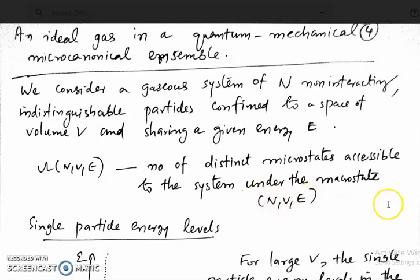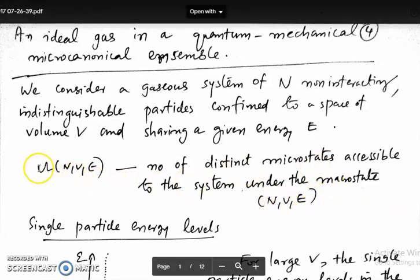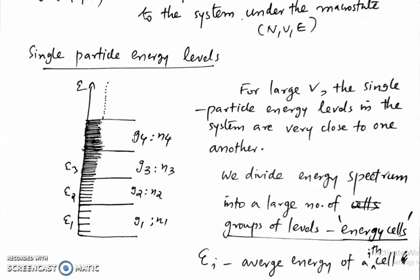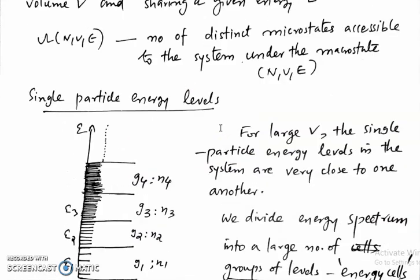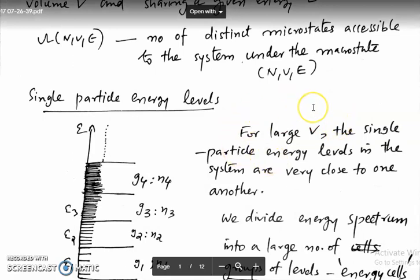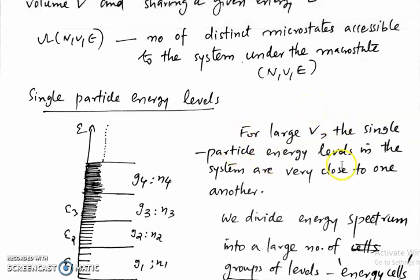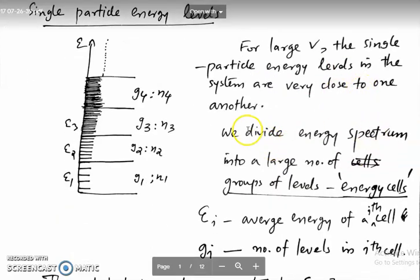These three — N, V, and E — are constants here. The number of microstates accessible to the system under this macro state is given by Omega(N, V, E). For a large volume — and in statistical mechanics we always consider large volume — the single particle energy levels in the system are very close to one another.